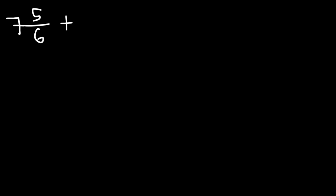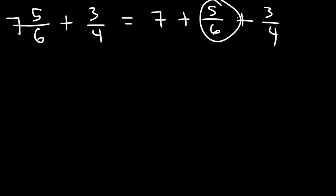By the way, if you want more examples on fractions and mixed numbers, check out the description section of this video — you can find other videos on fractions and mixed numbers for more practice problems. Now let's move on to our final example: 7 and 5 sixths plus 3 over 4. We can write this as 7 plus 5 over 6 plus 3 over 4. To add these two fractions we need common denominators. You can multiply 6 and 4 and get 24, but 24 is not the least common multiple of 6 and 4.